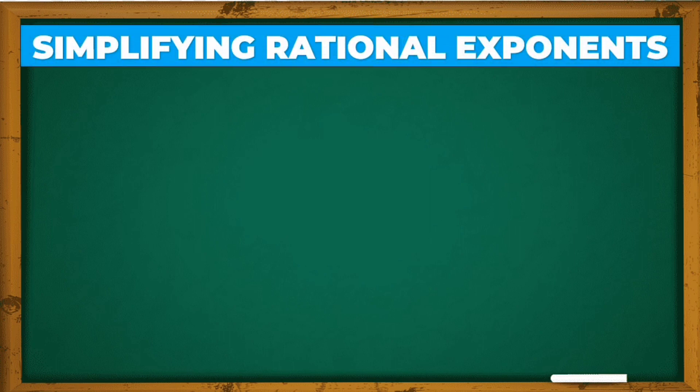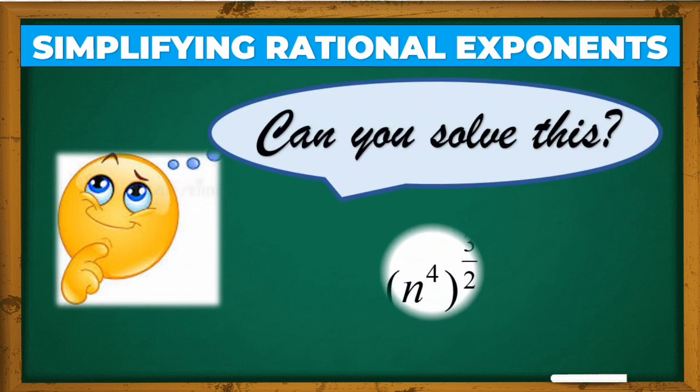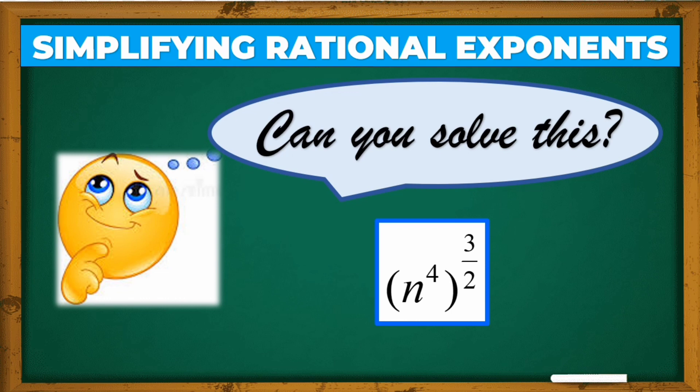Hello everyone! I'm Teacher Vee and we have another lesson in mathematics about simplifying rational exponents. I have a question for you. Can you solve this? A raised to 4, raised to 3 over 2. It's hard to solve, right? Because we have a fraction in our exponent. How do we simplify it? In this video, you will learn how to do this.